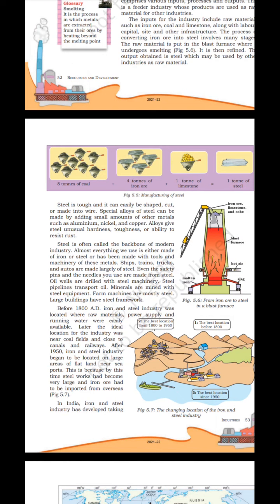Before 1800, the iron and steel industry was located where raw materials, power supply and running water were easily available. Later, the ideal location was near coal fields and close to canals and railways. After 1915, iron and steel industry began to be located on large areas of flat land near seaports, because steel works had become very large and iron ore had to be imported from overseas.